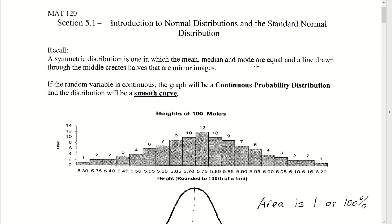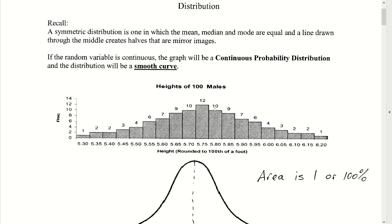Hi everyone. In section 5.1 we're going to be looking at the introduction to normal distributions and the standard normal distribution. In this chapter we will now be focusing primarily on continuous probability distributions, and the distribution will be a smooth bell-shaped curve.